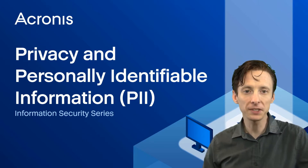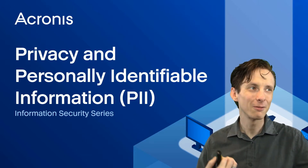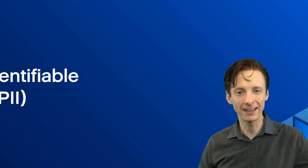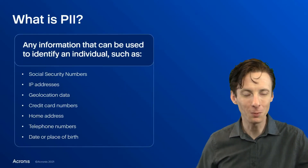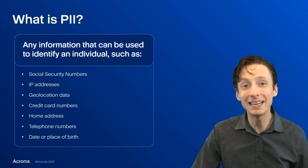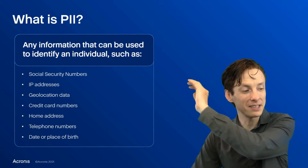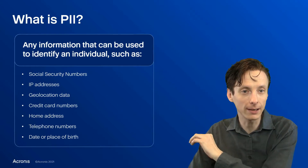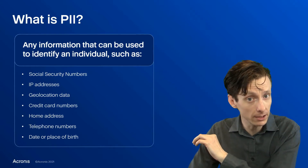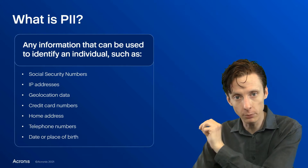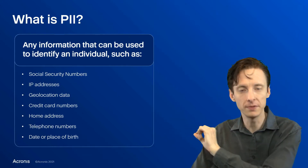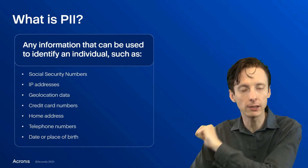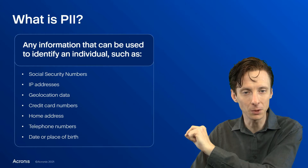So personally identifiable information — let's define that. It's anything that can identify a unique individual or uniquely identify an individual. So it could be a single data point, like a social security number that really just points to one person, or it could be a combination of data points that are enough to uniquely identify someone.